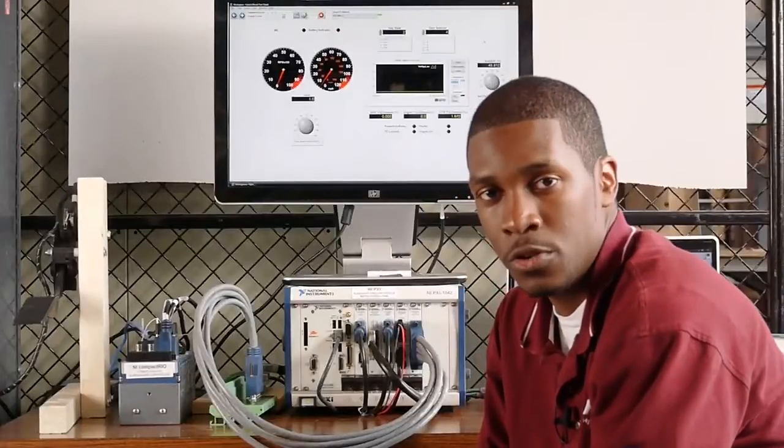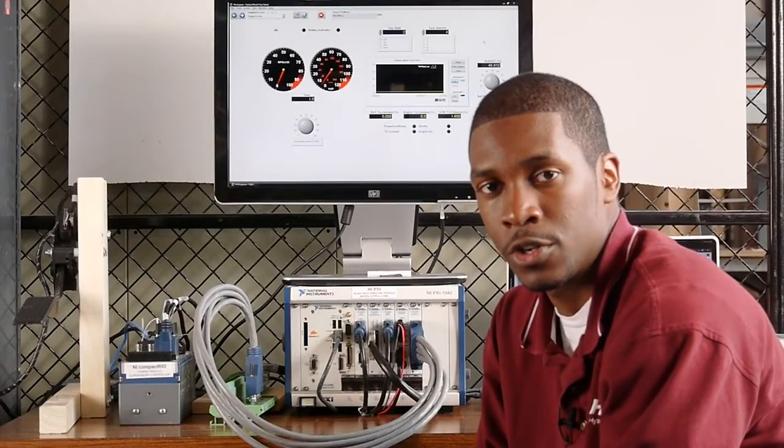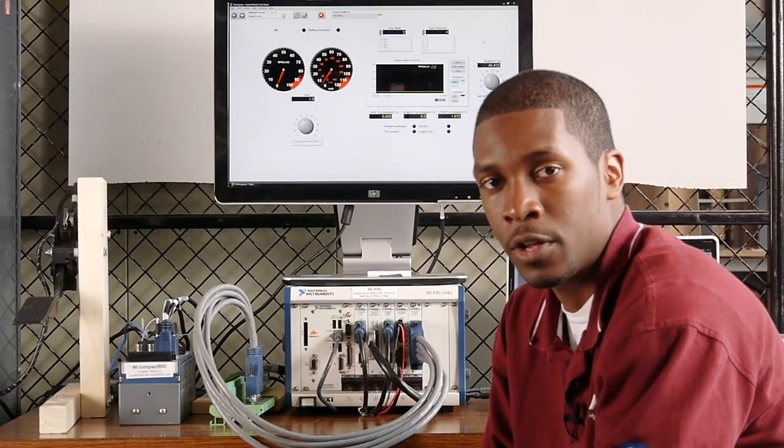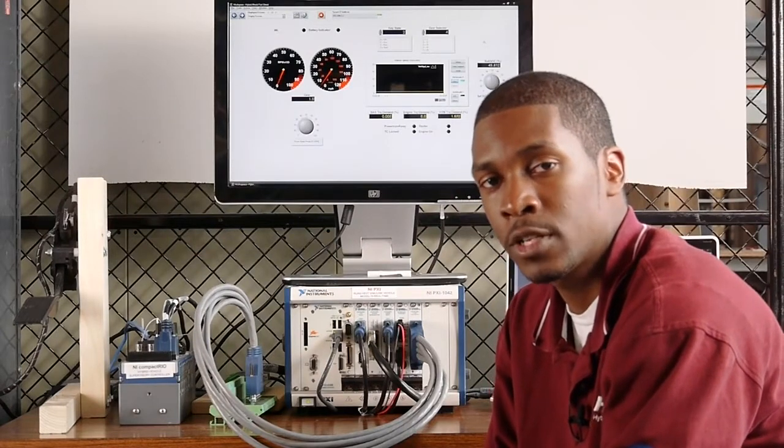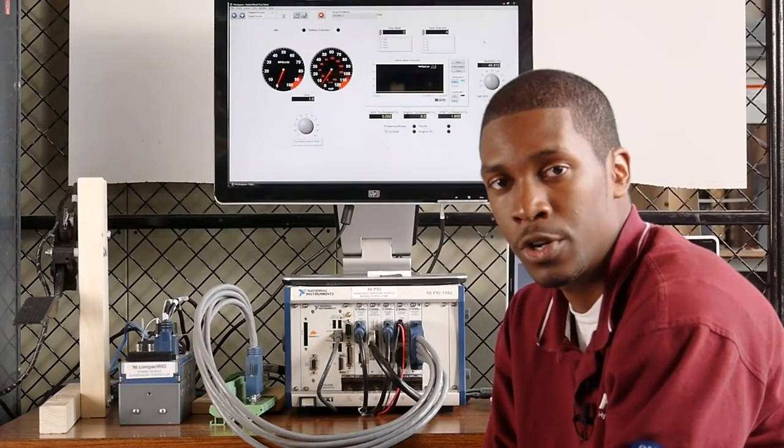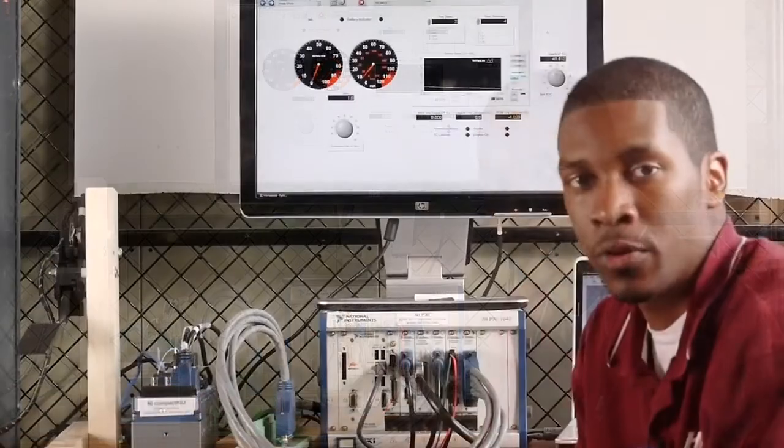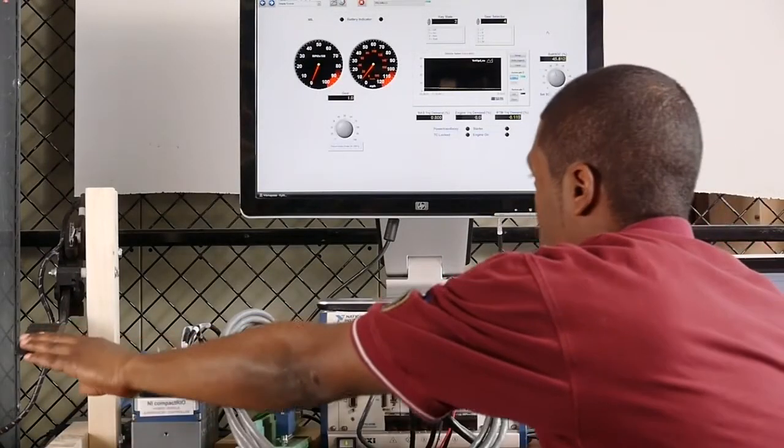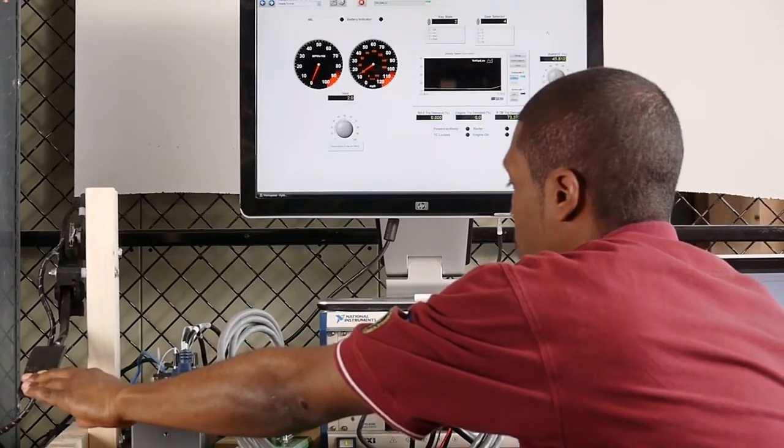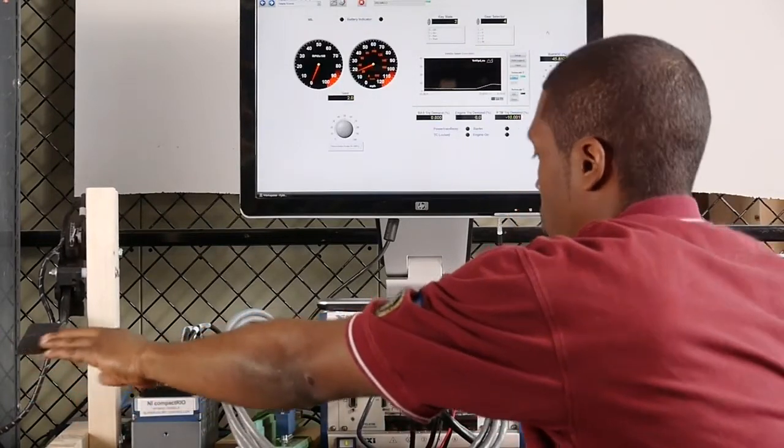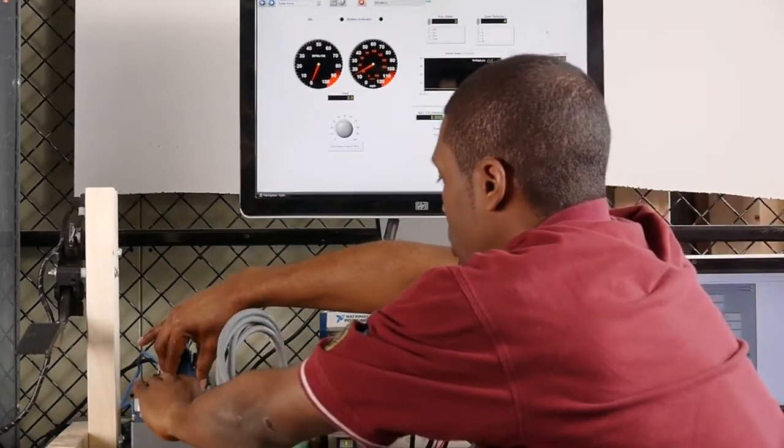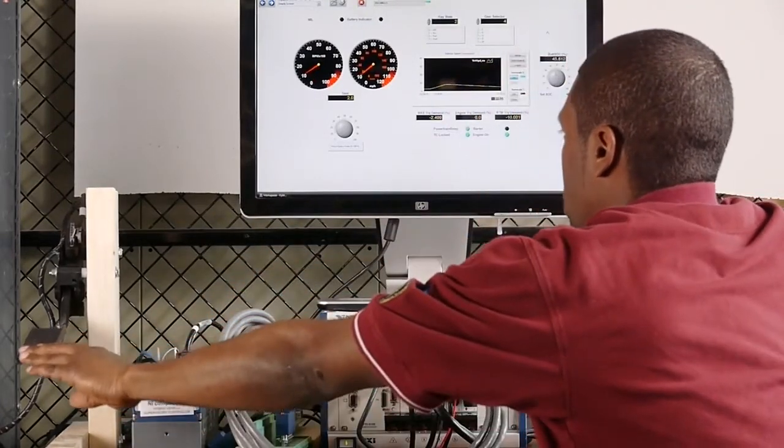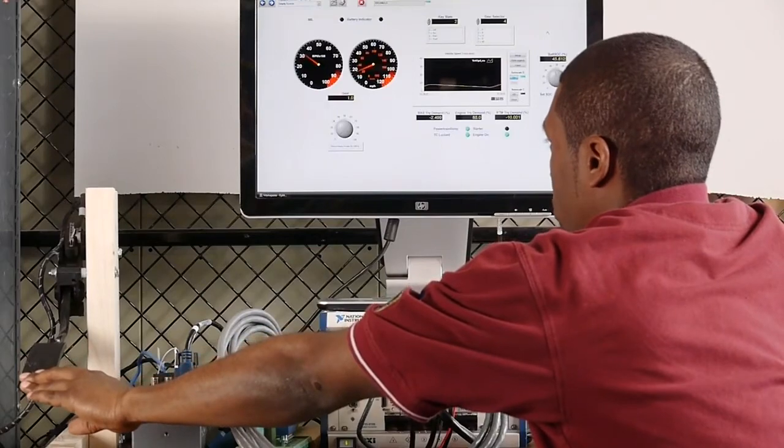Two ways we can use this controller HIL setup for fault insertion would be fault insertion via hardware and fault insertion via software. An example of fault insertion via hardware would be to physically pull signals from the controller to ensure it takes appropriate action. Currently we're driving using the rear traction motor in electric vehicle mode. If we pull the cable that allows CAN communication with the rear traction motor, you can see that the controller will immediately bring the engine on to allow us to continue driving safely using the flex fuel engine.